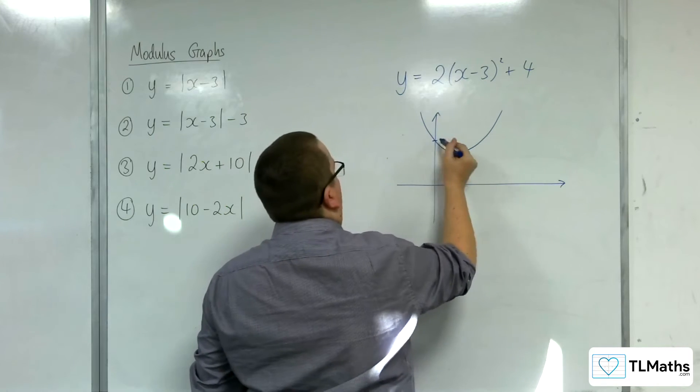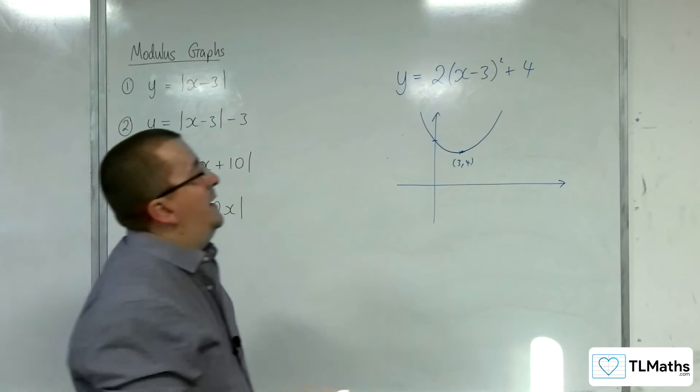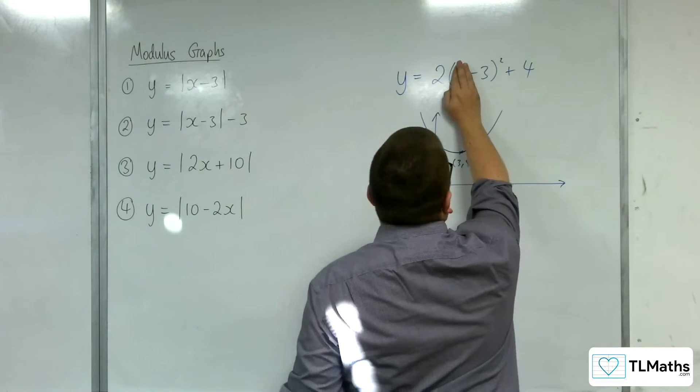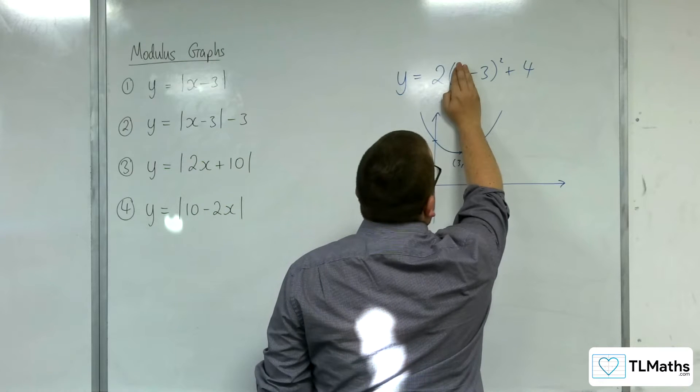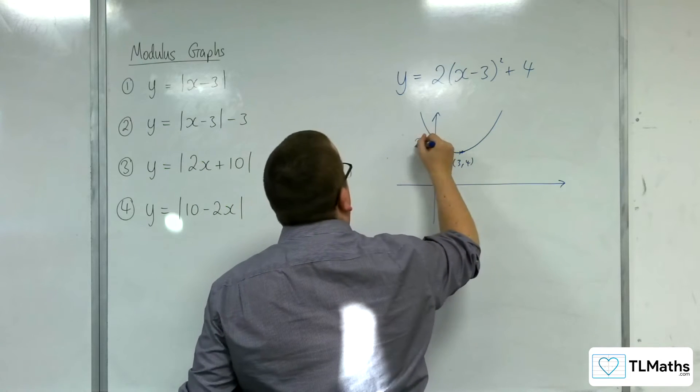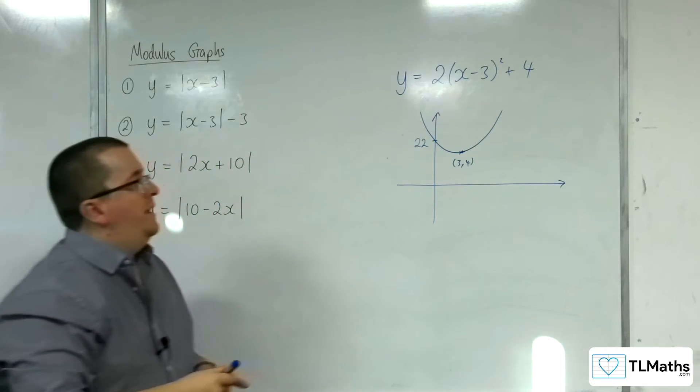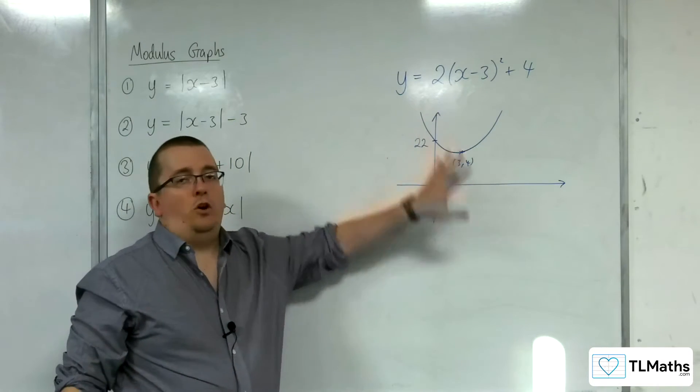And then we'd be able to work out where it crosses the y-axis by putting x is 0. So you've got 2 lots of (-3)², so that's 2 lots of 9, so 18 plus the 4, so 22. And so this would be a sketch of the quadratic.